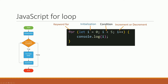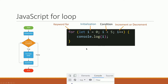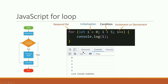For the 'for' keyword, we define the initialization, then the condition. We need to use the set-up index. For the index, the condition is 0 is less than 5.